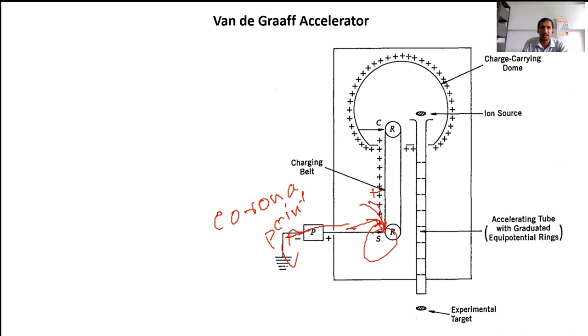The charge is carried on this conveyor belt, which is usually a non-insulating material, and is rolled by motors. There are two motors here that move this conveyor belt. The conveyor belt takes this positive charge up to this dome where there is a collector C that collects this positive charge and transfers it to this dome. Typically, this technique can produce an accelerating potential of around 12 mega electron volts.